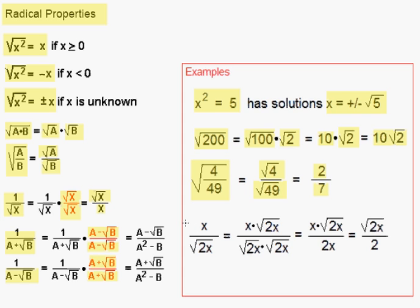In the last example, we want to rationalize the denominator of the fraction x over the square root of 2x. We can do so by multiplying x over the square root of 2x by the square root of 2x over the square root of 2x. When we do that, the bottom turns into 2x and the top is x times the square root of 2x. The x's cancel out, so our result is the square root of 2x over 2.